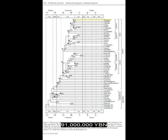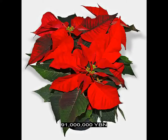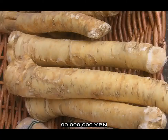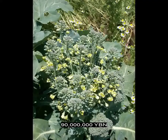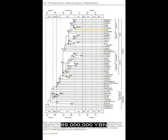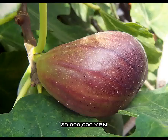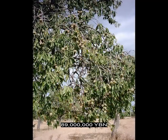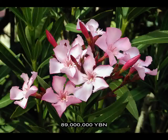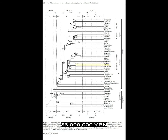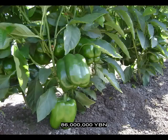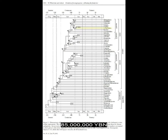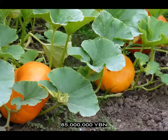The rosids Malpighiales evolve—ancestor of coca, rubber tree, cassava, poinsettia, willow, poplar, and aspen. The rosids Brassicales evolve—ancestor of horseradish, mustard, cabbage, broccoli, radish, and papaya. The rosids Rosales evolve—ancestor of hemp, hop, jackfruit, fig, strawberry, rose, raspberry, apple, pear, plum, cherry, peach, and almond. The asterids Gentianales evolve—ancestor of oleander and coffee. Asterids Solanales evolve—ancestor of bell pepper, tomato, tobacco, potato, and eggplant. The rosids Cucurbitales evolve—ancestor of melon, cucumber, pumpkin, squash, and zucchini. The rosids Fagales evolve—ancestor of many flowers that produce edible nuts, for example birch, hazelnut, chestnut, beech nut, oak, walnut, pecan, and hickory.